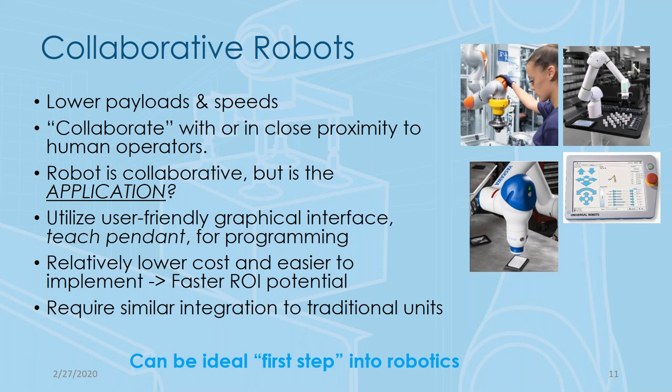One key point: the robot itself is collaborative and always will be. But the real question is whether your application is collaborative. You're never taking a robot out of the box and using it as-is — you're always adding end effectors, working with work pieces in a work cell with other tools and hardware. That's where the risk assessment comes in to truly understand how collaborative the application actually is.